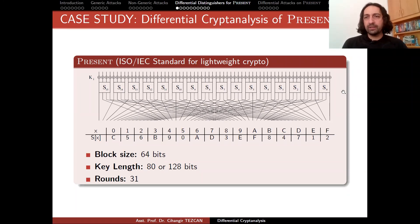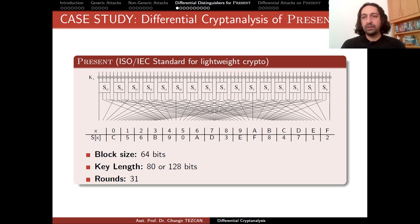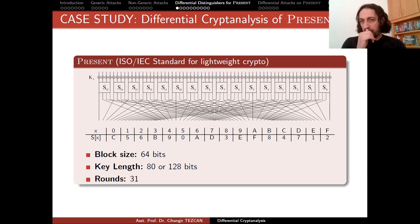Every attack starts with a distinguisher, and differential cryptanalysis checks the effect of small differences on the input and looks at the output to see how it changes. In our case study, we will focus on differential cryptanalysis of PRESENT. Our aim is to generate a differential distinguisher for PRESENT.